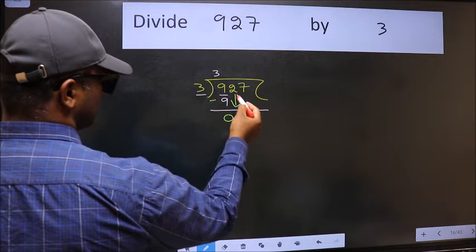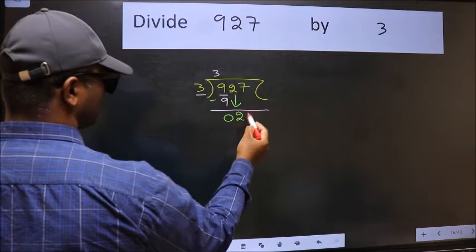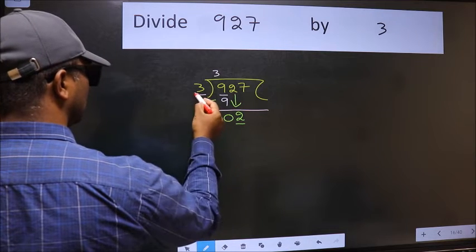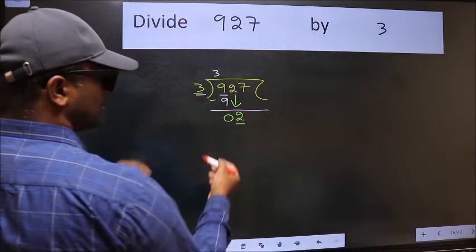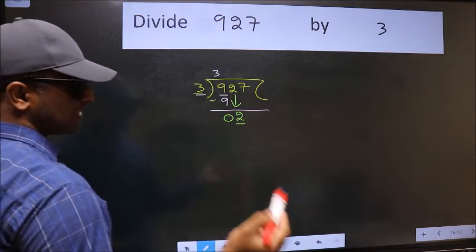After this, bring down the beside number. So 2 down. Now here we have 2 and here 3. 2 is smaller than 3. So we should bring down the second number.